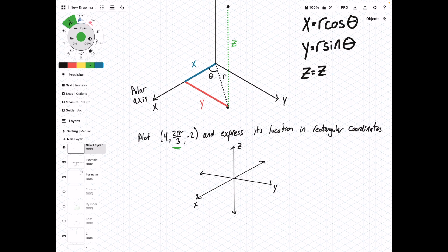So what we want to do is we're going to take this 2 pi over 3, and we know that this is 120 degrees. So we're going to come away from this positive axis here, and then we're going to extend the line some distance R or 4, and then finally we're going to drop down negative 2 along the z-axis.